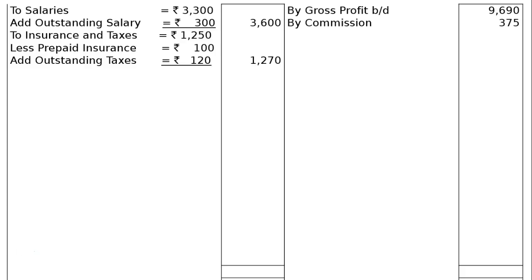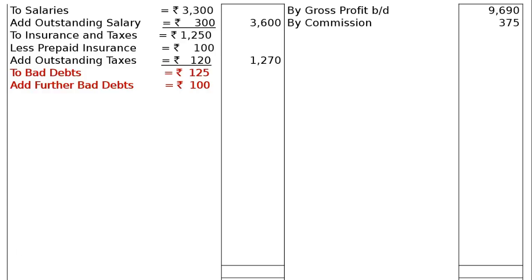The final column for insurance and taxes will be rupees 1,270. The next entry is bad debts rupees 125 as given on the debit side of the trial balance. Adjustment five states: write off a further rupees 100 as bad debts. So add further bad debts rupees 100.